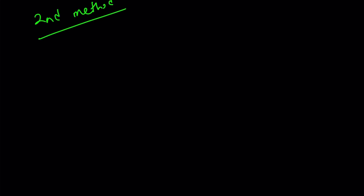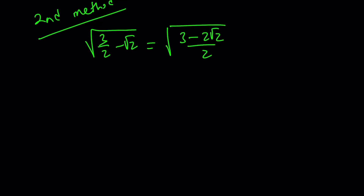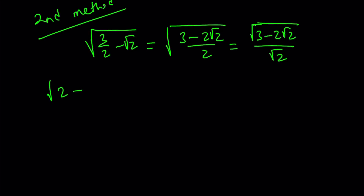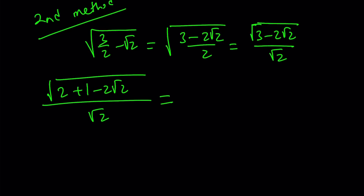For the second method, I want to make a common denominator first, so write the expression as 3 minus 2 root 2 over 2, then separate the numerator and the denominator, so I can write it as the square root of 3 minus 2 root 2 divided by the square root of 2. Now, the numerator is a special expression, because 3 minus 2 root 2 can be written as 2 plus 1 minus 2 root 2 under the radical, and the bottom still stays the same. Notice that we have a squared plus b squared minus 2ab, so the numerator inside the radical can be written as the square root of the quantity root 2 minus 1 squared.